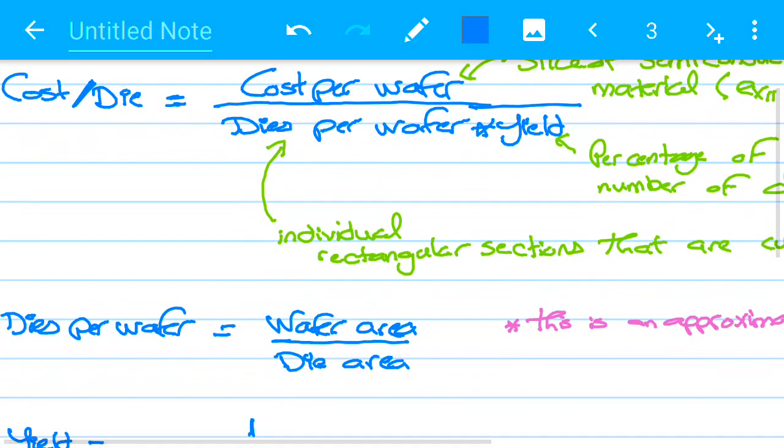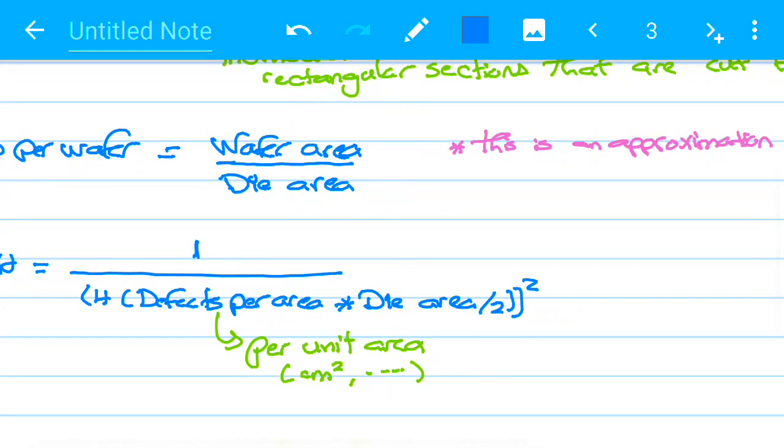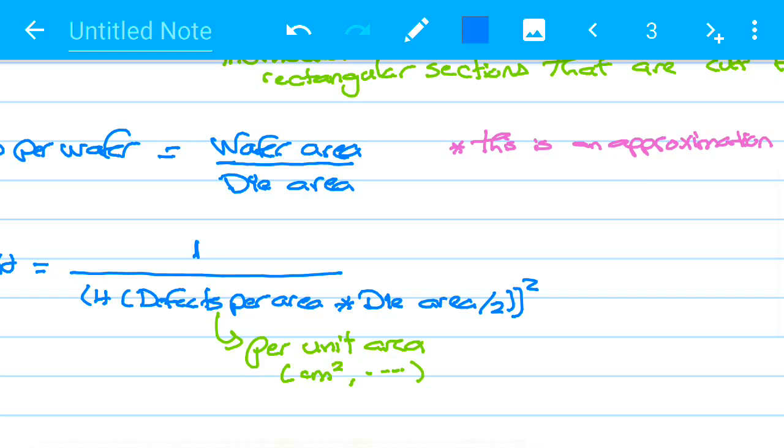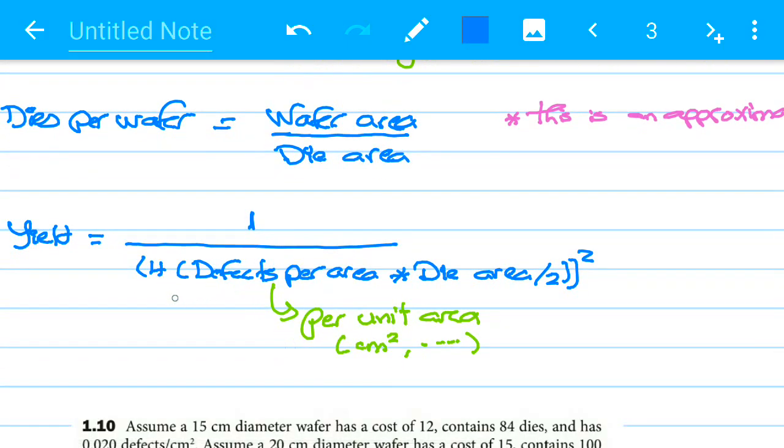So here we knew how to calculate the dies per wafer. The yield is 1 over 1 plus defects per area, per area means times die area over 2 all squared.